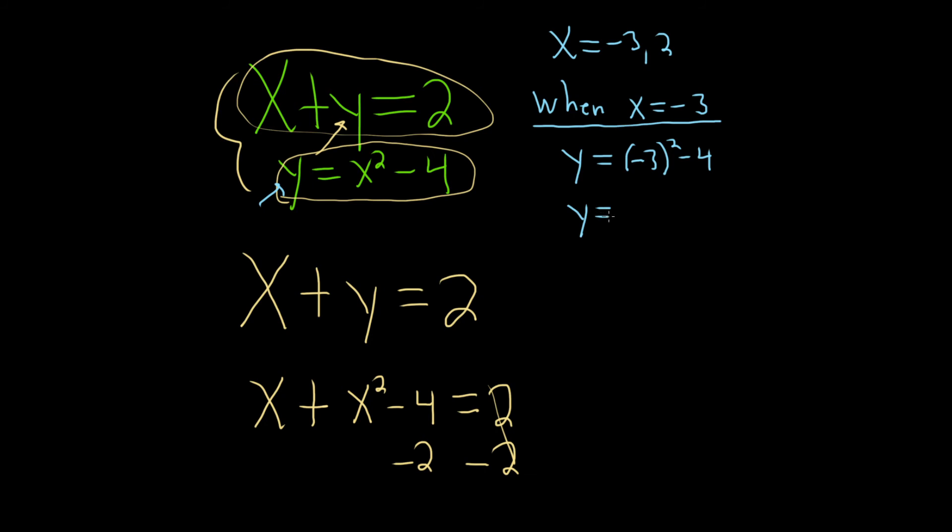Let's use this equation here because it's easier. y equals negative 3 squared minus 4. So y equals 9 minus 4. So y equals 5. So when x is negative 3, y is equal to 5. So that gives us an ordered pair, negative 3 comma 5.